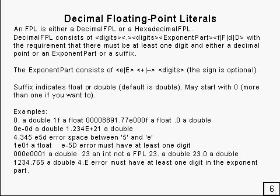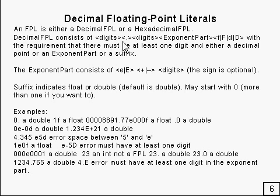For floating-point literals there are two types: the decimal floating-point literal and the hexadecimal floating-point literal. I've used FPL everywhere for floating-point literal just to save space. A decimal floating-point literal consists of some digits followed by a decimal point, followed by some more digits, followed by an exponent part, and then F or D in upper or lower case.